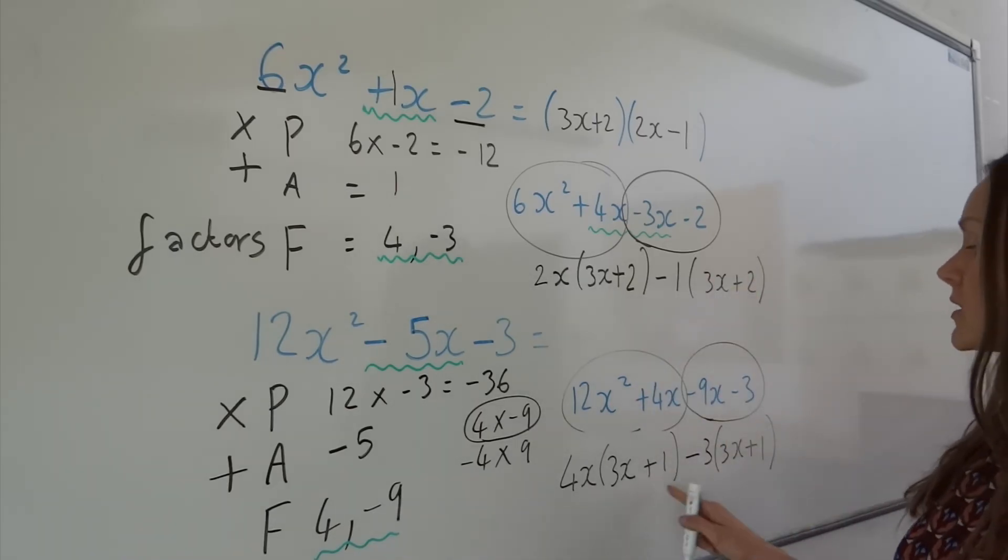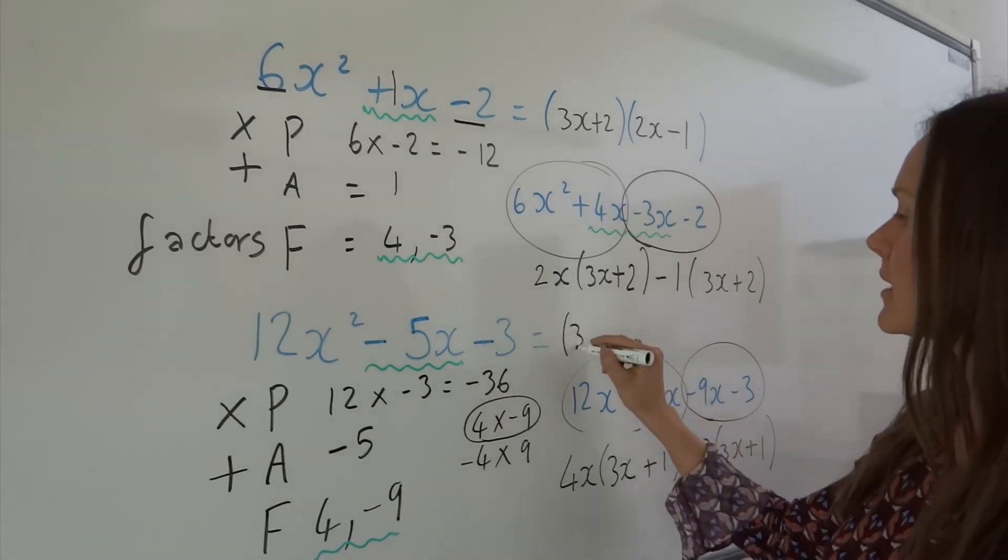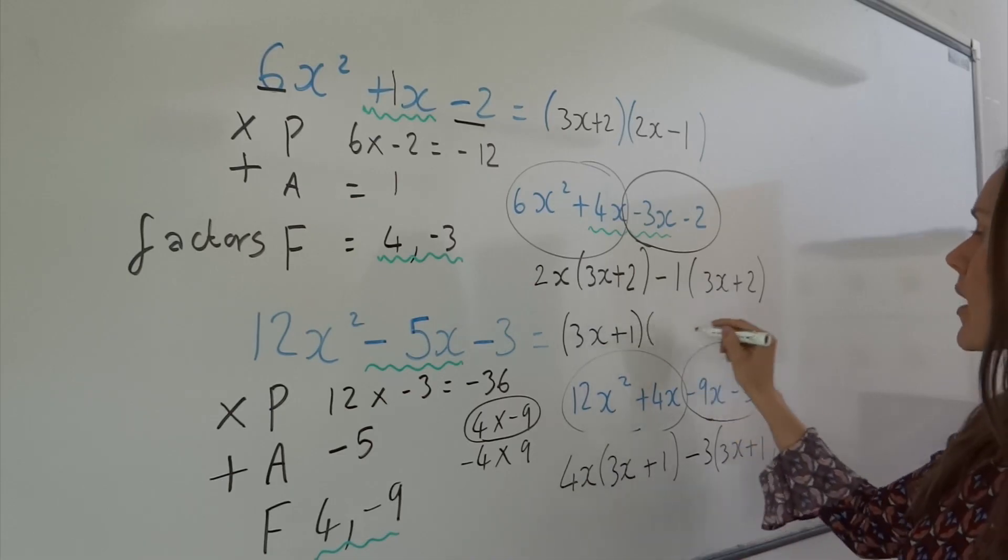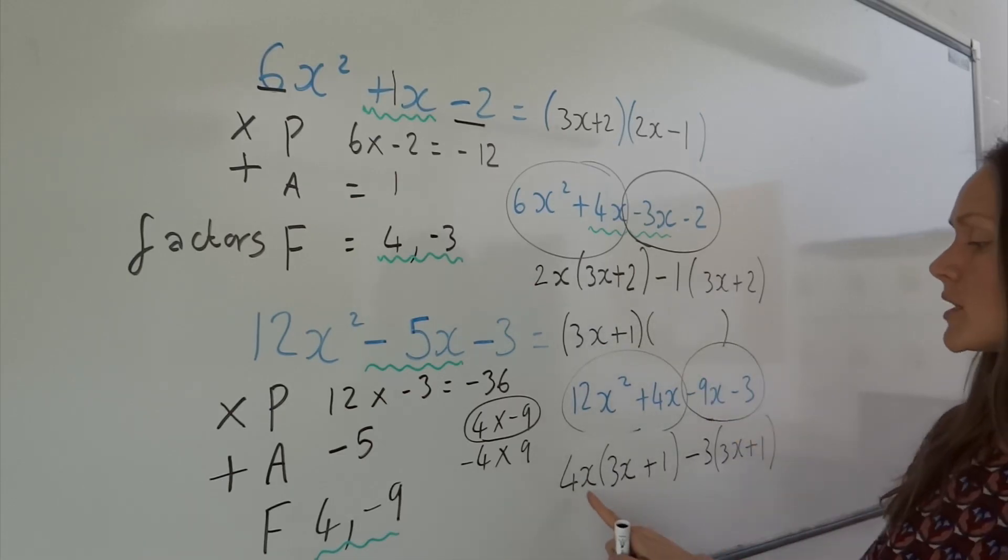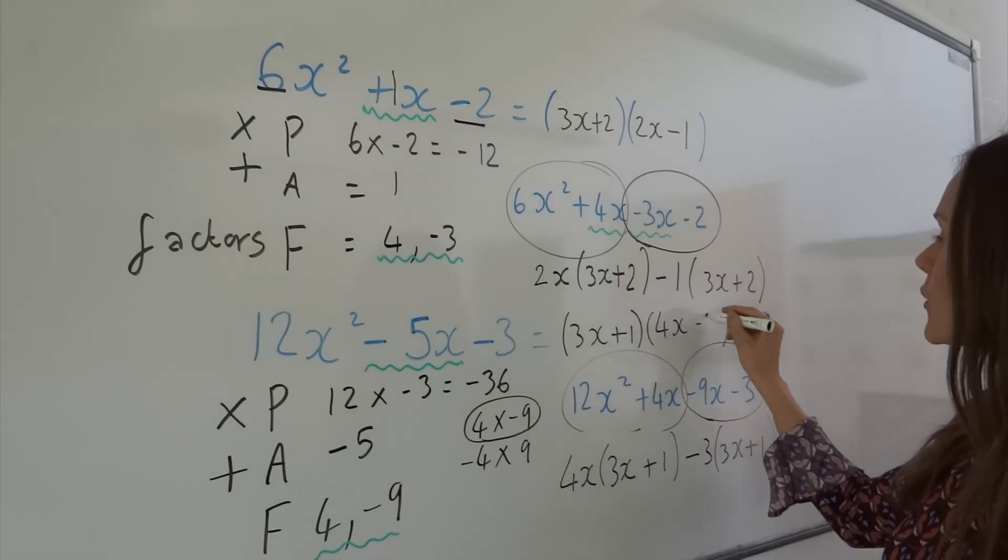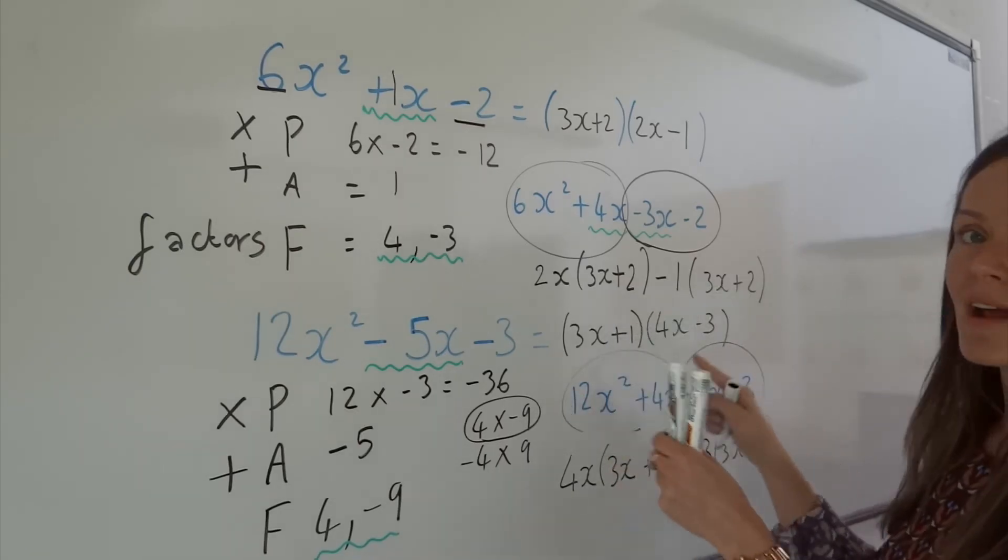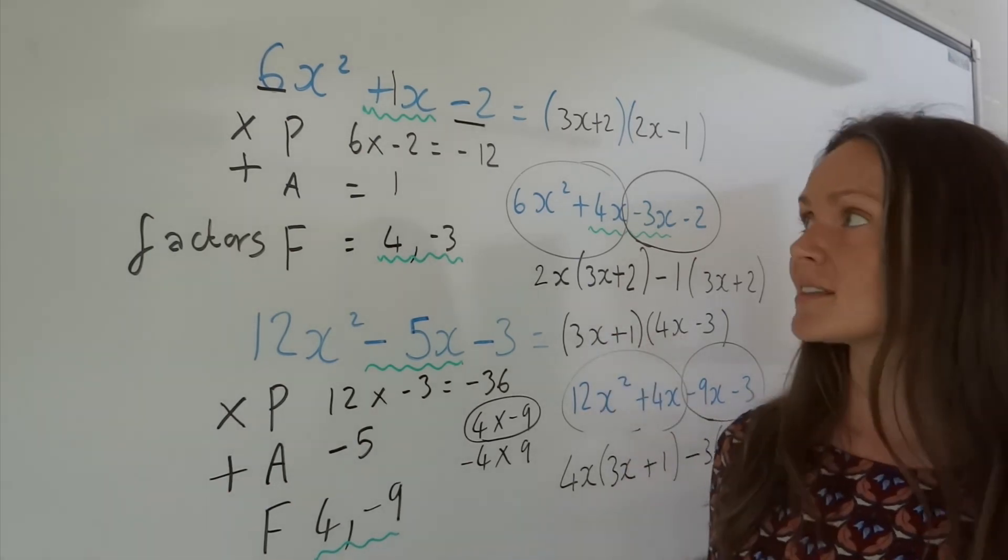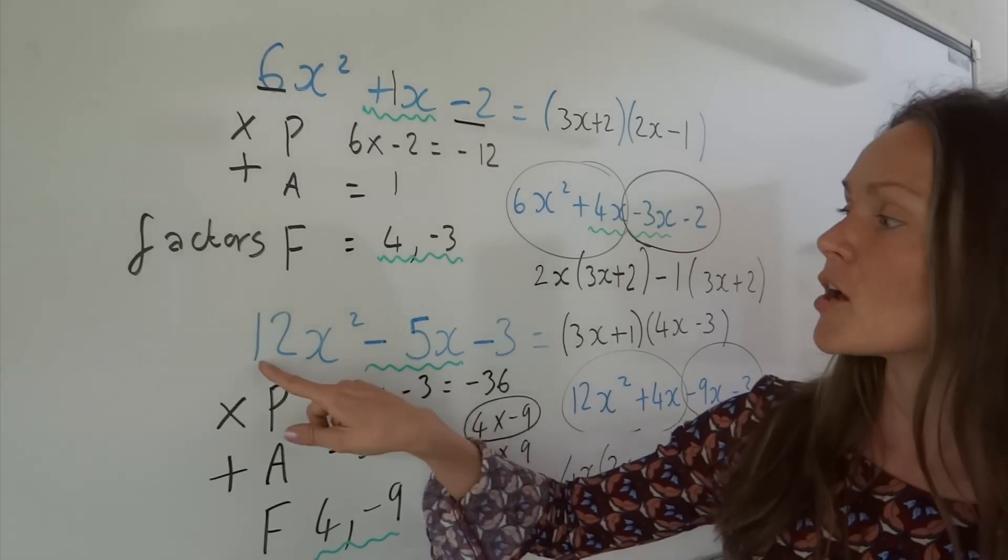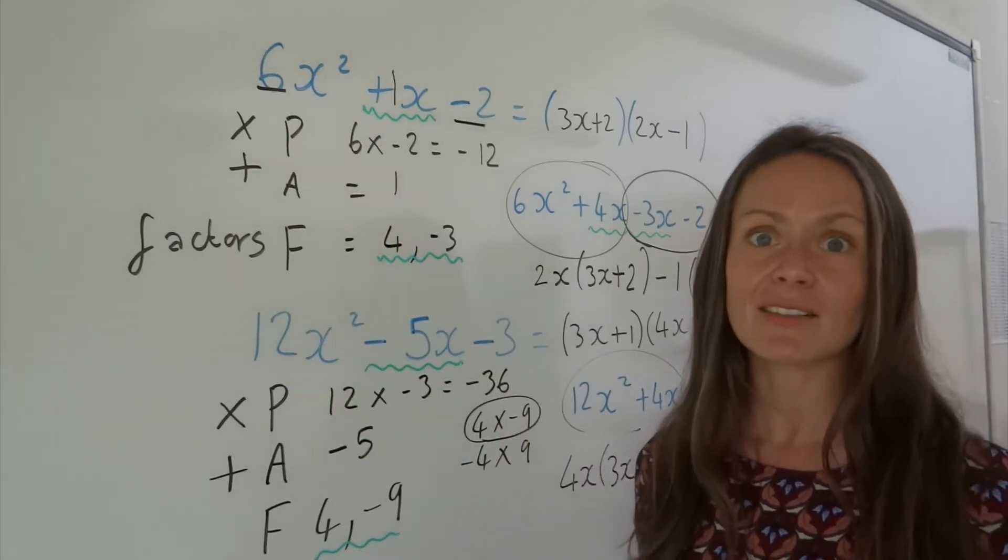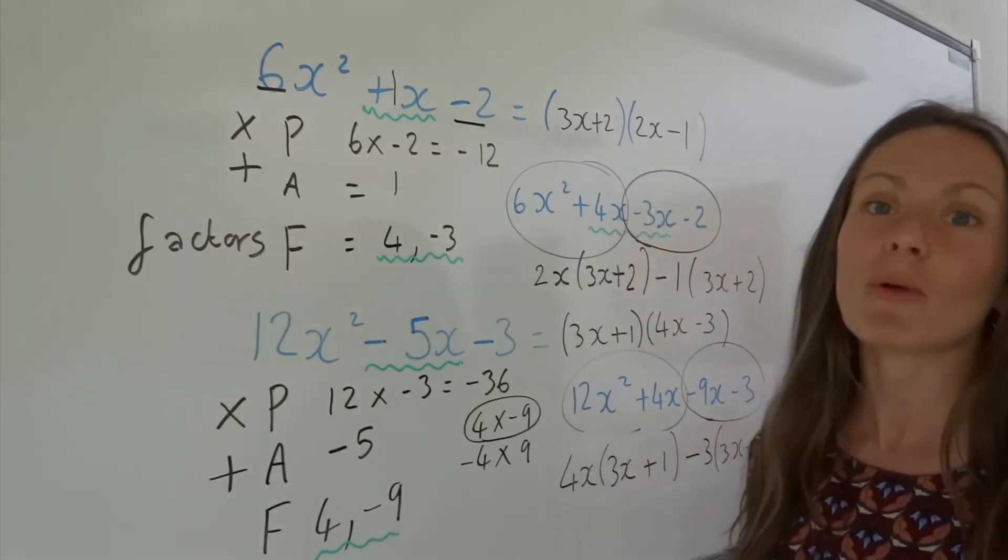So the final step is bringing it all together. So the bracket that's repeated, 3x plus 1, is the first part. And then in the second bracket are the bits left over, which are 4x and minus 3. But remember, the order of those two brackets, you can write it either way around and you'll get the same answer. So there's factorising quadratics, especially when there's a number in front of the x squared and it might be a bit more difficult to just guess those factors that go inside the brackets.